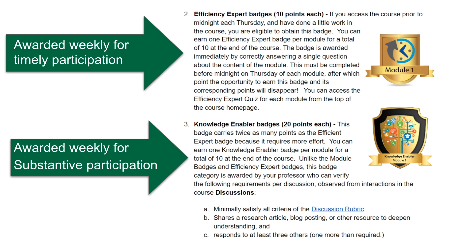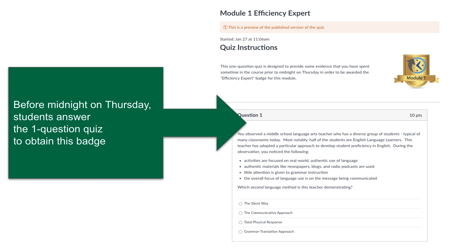The second badge I call a knowledge enabler badge, and that's one awarded for substantive participation in discussion forums. By substantive, it means going beyond the minimal requirements, tying in some sort of external resource to bolster what they're saying, and replying to one more person than required for that particular discussion. The efficiency expert badge is automatically awarded — students take the quiz, the system recognizes they've answered correctly, and the badge is awarded. For the knowledge enabler badge, I use SpeedGrader to easily verify that they have responded to the requisite number of students and that their postings are substantive and include an external resource.